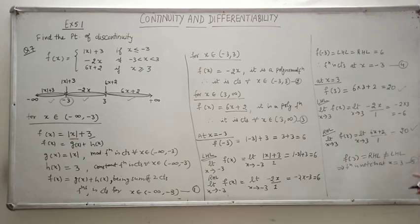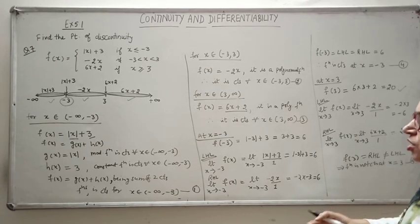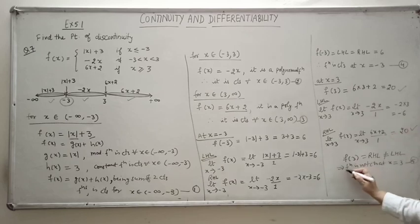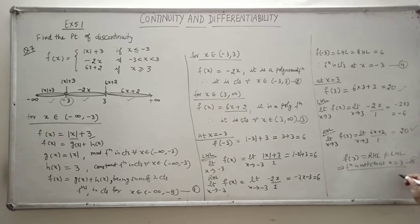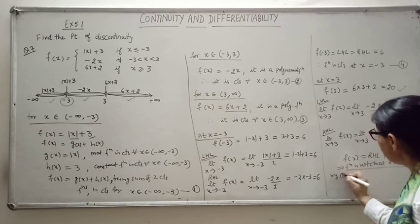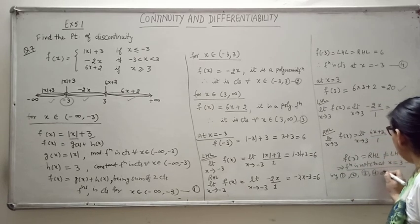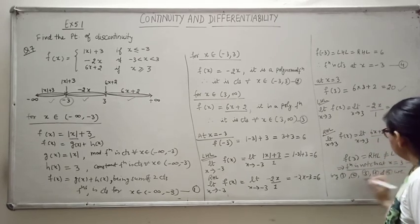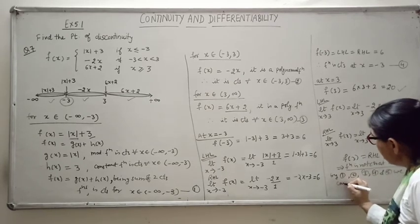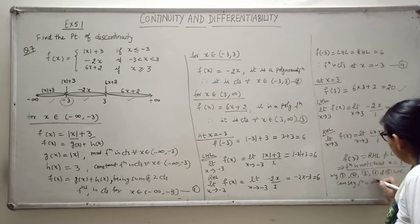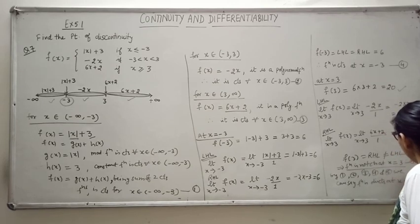This implies the function is not continuous at x equals 3. So from results 1, 2, 3, 4, and 5, we can say the function is discontinuous at x equals 3.